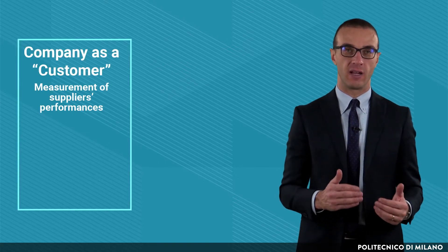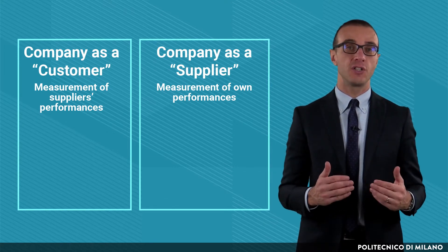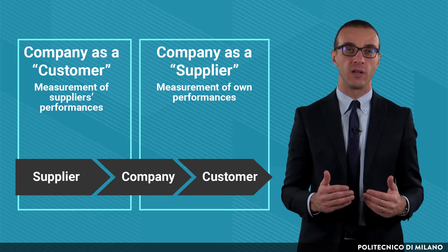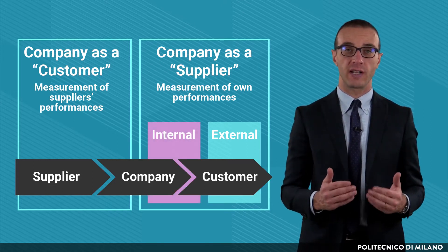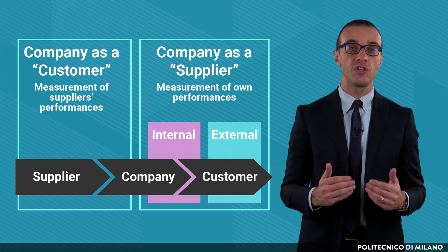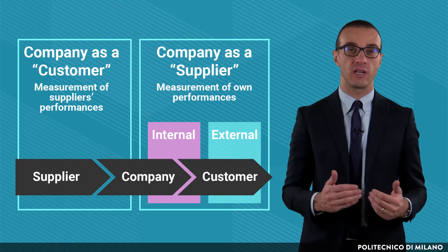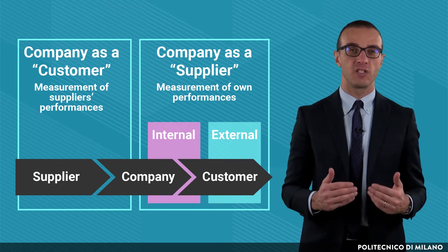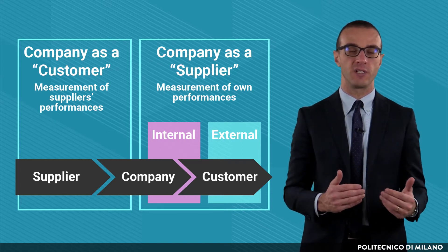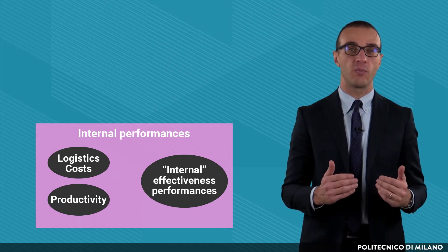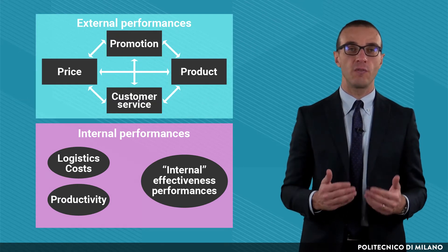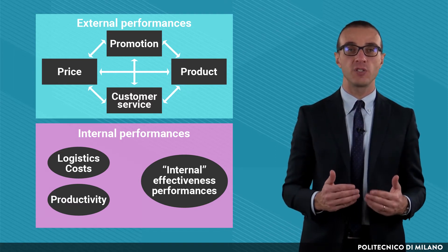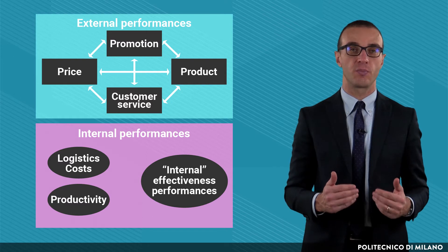A company can be seen from a double perspective: as a customer from its suppliers and as a supplier from its customers. There are two types of customers a company has to consider: external customers, which are the real company's customers, and internal customers, which are functions and departments that use as inputs the outputs of other upstream functions and departments of the company itself. Accordingly, it is possible to distinguish between internal and external performances. Internal performances are those seen by the company, comprehending both effectiveness and efficiency ones such as productivity and logistics costs. External performances are the ones seen by the customers and correspond to the four marketing levers: price, promotion, product, and customer service.